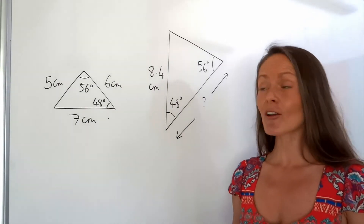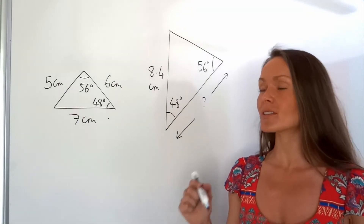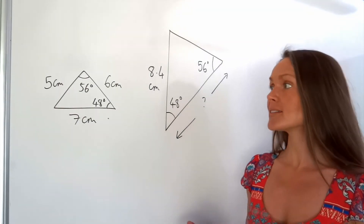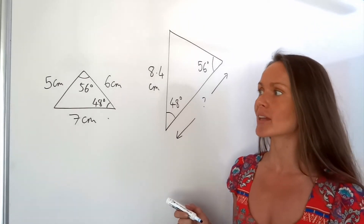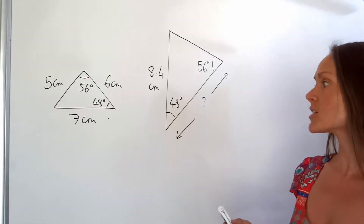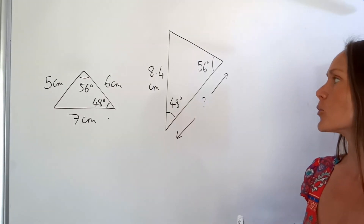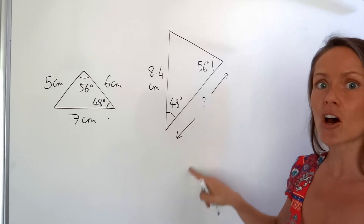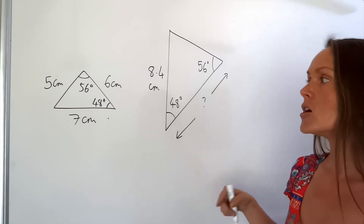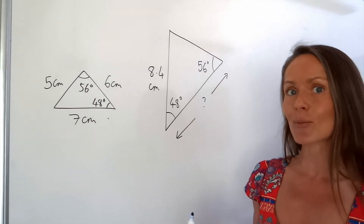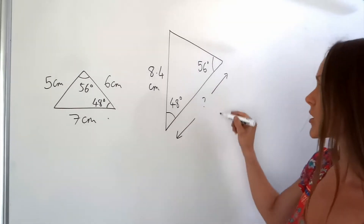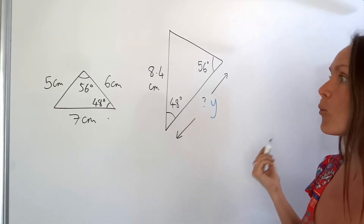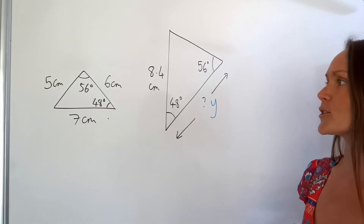Here I've got two more similar triangles. I know they're similar because they have the same angles again. This time I'm trying to work out the missing length in the large triangle, so I'm going to start by labelling that with a letter. I'm going to call that unknown side Y in this question.